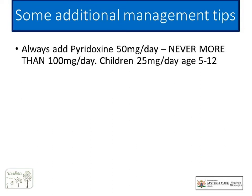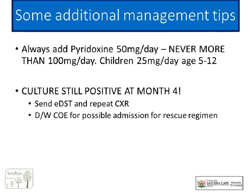Our threshold for concern for both regimens is month 4. At this point we expect the patient to be smear- and culture-negative. If the culture at month 4 is still positive, you need to request an extended DST through the NHLS. There is a very clear SOP in the guide, and you also need to do an X-ray on your patient. Discuss with your local centre of excellence about possible admission and when to consider a rescue regimen.